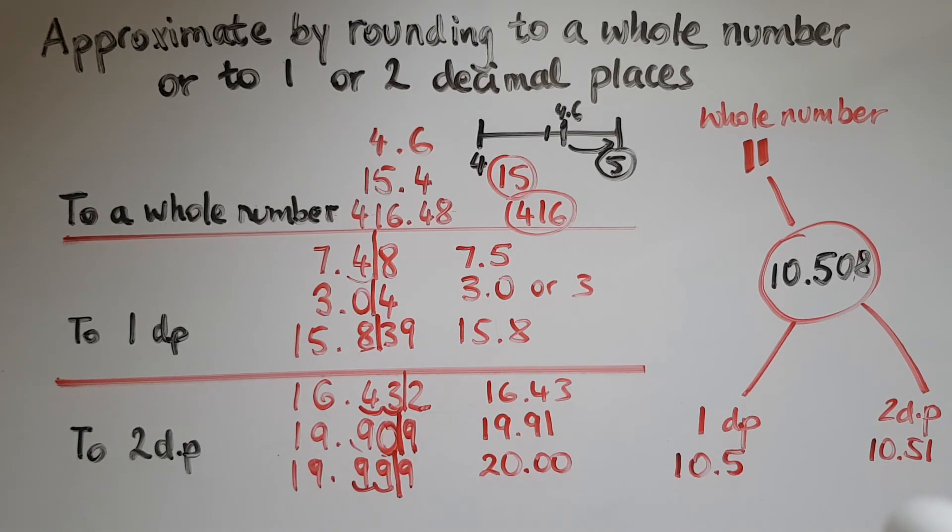So I hope this has shown you how to approximate by rounding to a whole number, to one decimal place, or two decimal places.